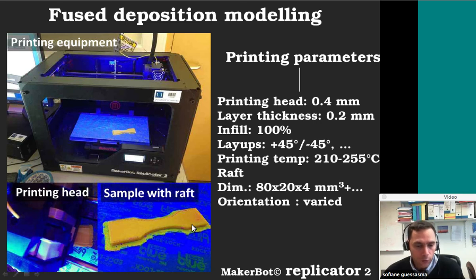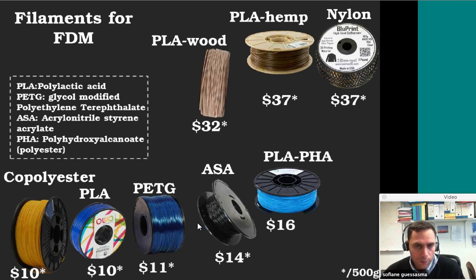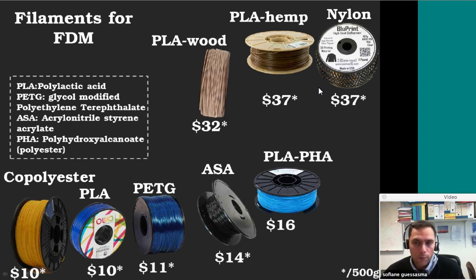With this type of technology, you can print different types of materials. I indicated here the prices on the market for some of them — PLA, PETG. And if you need to print materials with some reinforcement, like PLA with wood, you need to spend more money. Typically, for example, nylon is one of the best filaments for strength with this type of printing machine.